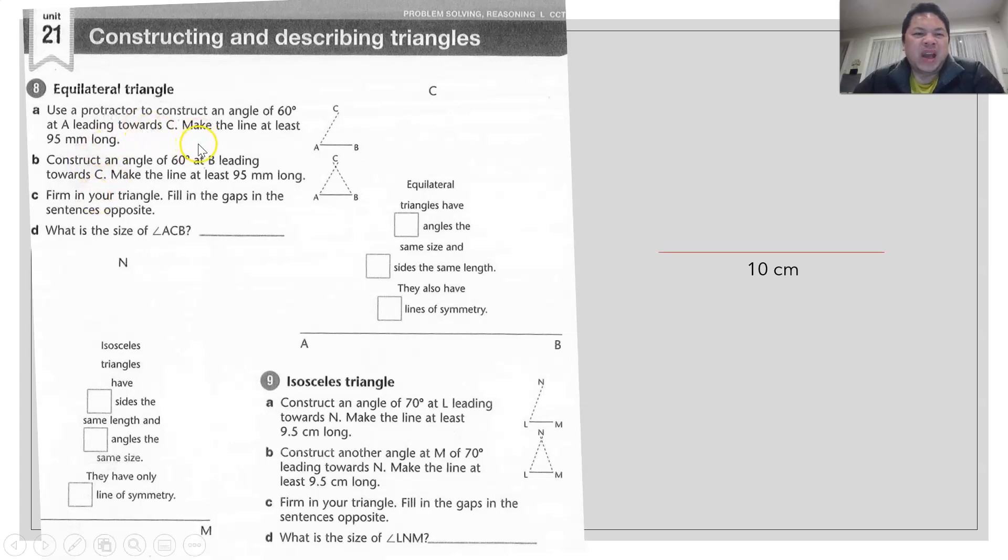They say draw a line that is at least 95 mm. So I've drawn a 100 mm which is equivalent to 10 cm line. Again, this is not drawn to scale, just be mindful. I just draw a line that is 10 cm. And then from here they say at point B, I assume point B is here, which is different from this A and B here.